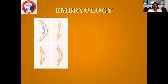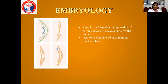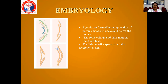Coming to the embryology — how are the eyelids formed? They are formed by the reduplication of the surface ectoderm above and below the cornea. The surface ectoderm comes in front of the cornea and forms two folds above and below the cornea. These folds enlarge so that their margins meet and fuse. Initially they fuse together; later they open to form the conjunctival or palpebral fissure. The lids cut off a space called the conjunctival sac. The upper lid comes from the surface ectoderm above and the lower lid from the surface ectoderm below; both fuse together initially and form the conjunctival sac.